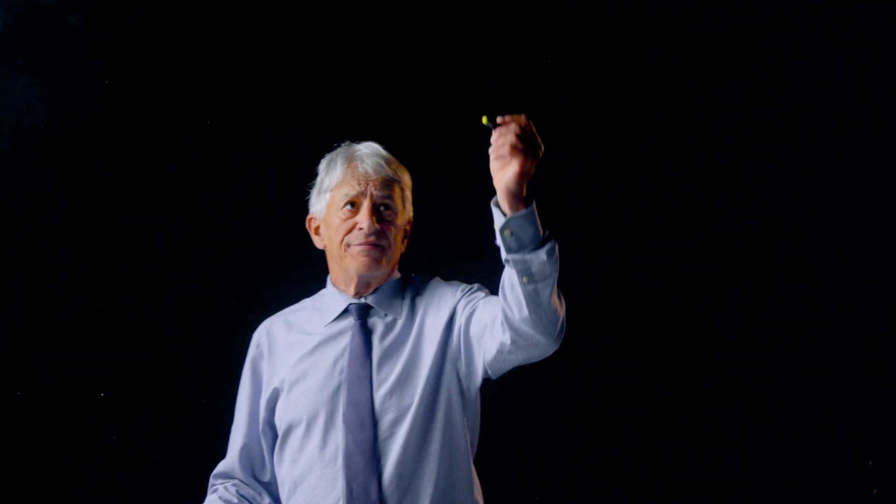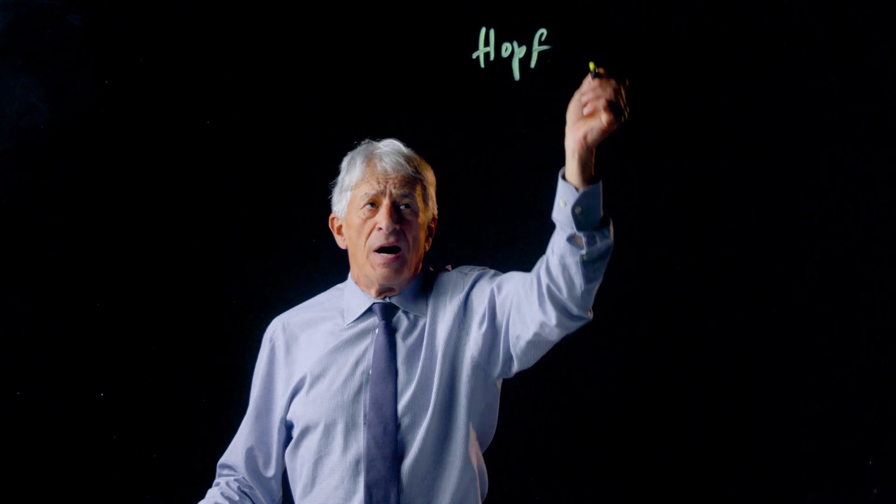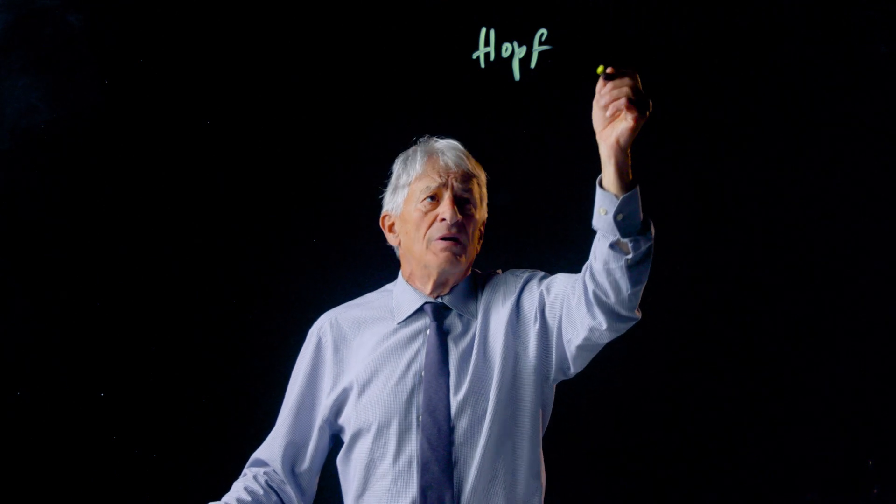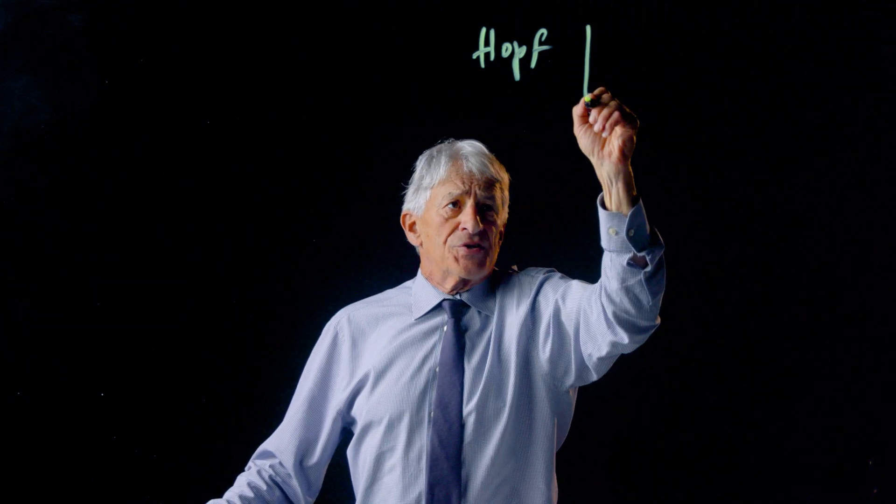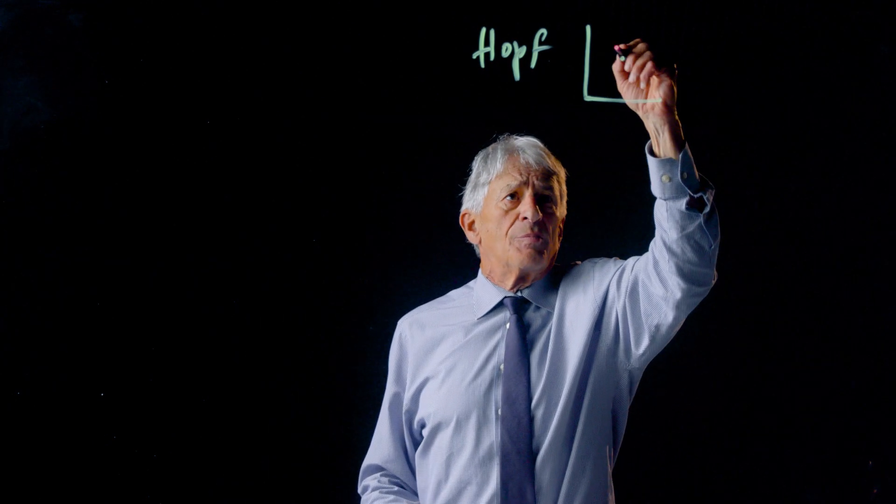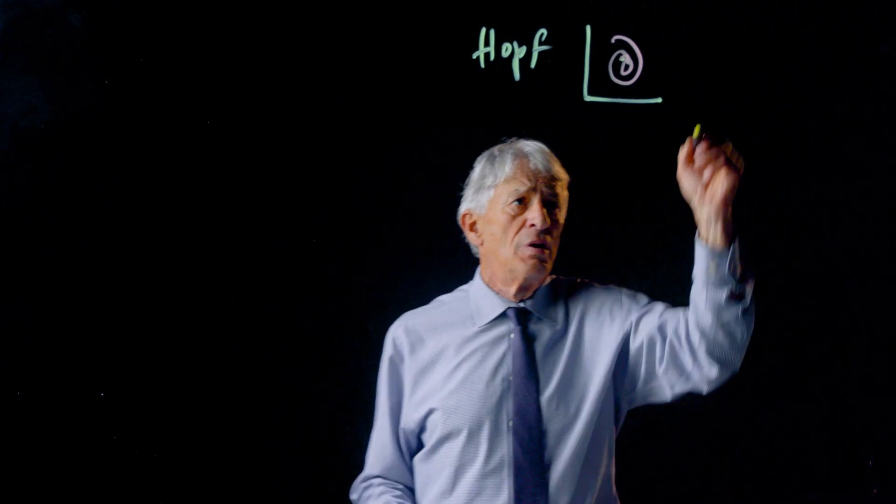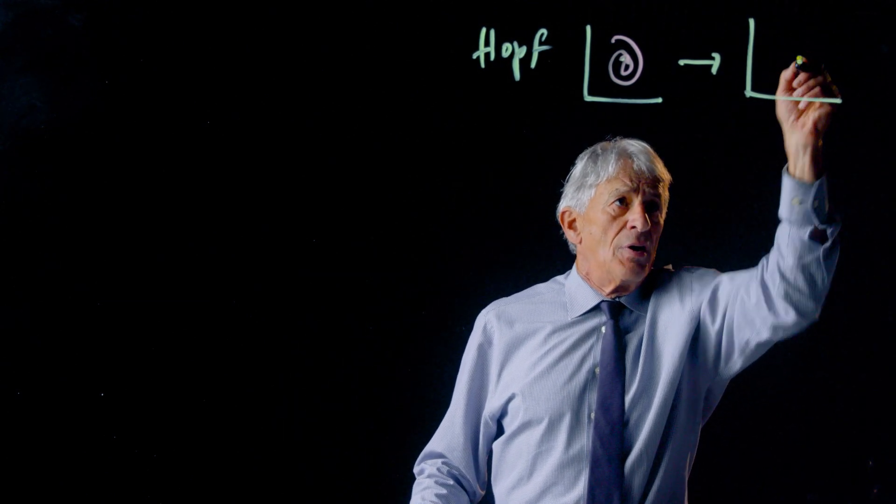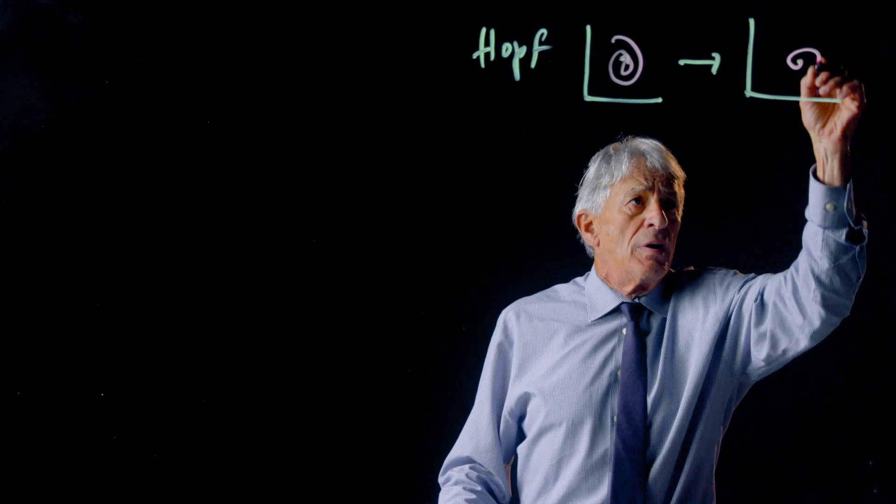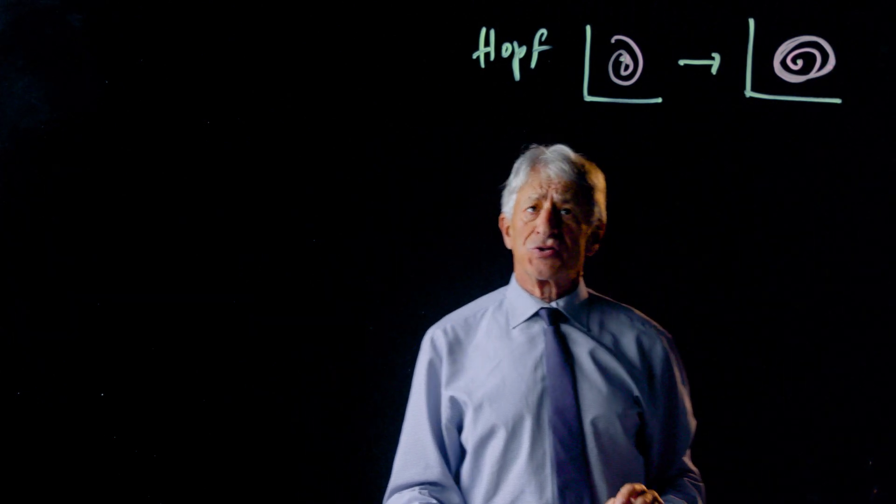So now we have a new bifurcation. It's Hopf bifurcation. And in Hopf bifurcation, as we just said, we go from a stable equilibrium point to an unstable equilibrium point and a new stable limit cycle attractor.